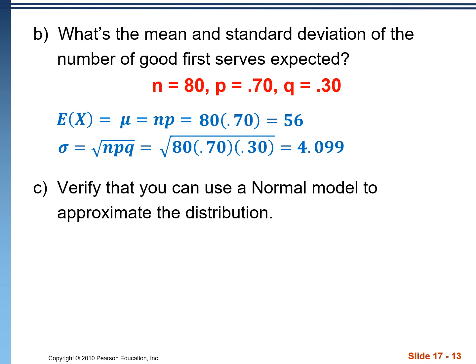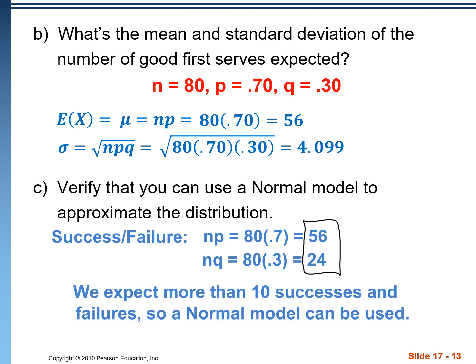Part C, verify that you can use a normal model to approximate the distribution. To use a normal model, we need to make sure that we have at least 10 successes and failures. So N times P, we already found that one. That was 56. N times Q, these two numbers should add up to 80 in this case because there's 80 serves and there's only two outcomes. So we can see both these numbers are greater than 10. We can use a normal model.